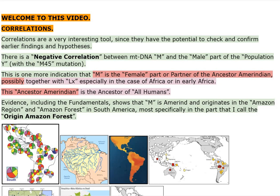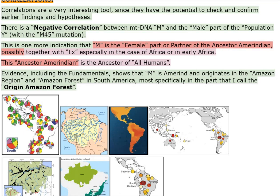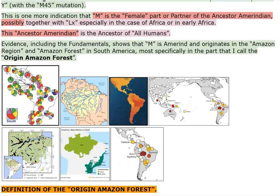There is a negative correlation between mtDNA-M and the male part of the population Y, with the M45 mutation. This is one more indication that M is the female part or partner of the ancestor Amerindian, possibly together with LX, especially in the case of Africa or in early Africa.